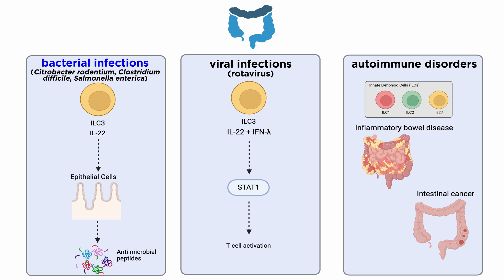The role of ILCs in intestinal infection has been demonstrated in various mice experimental models. For example, ILC3s participate in the immune responses to infections by Citrobacter rhodentium, Clostridium difficile, and Salmonella enterica, to name a few. ILC3s counter bacterial infections through secretion of IL-22, which stimulates epithelial cells to produce antimicrobial peptides. ILCs may also impact intestinal viral infections. Some studies have shown a protective role for ILC3s during rotavirus infections, in which IL-22 synergizes with interferon gamma in inducing activation of transcription factor STAT1.